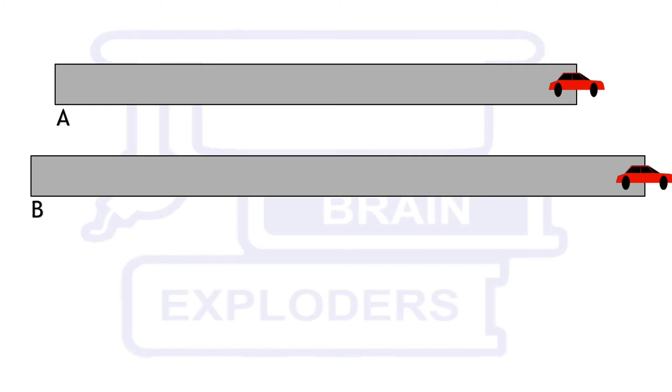We will try to find this time. Let the distances travelled by car A and B be x and y respectively. Both cars travel these distances in the same time Δt.